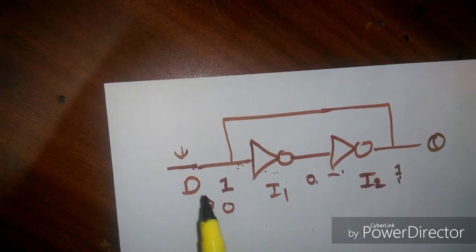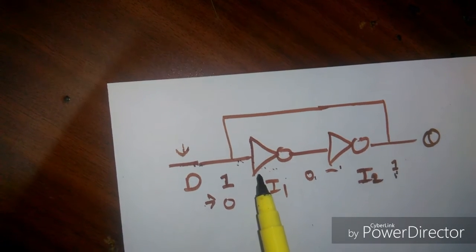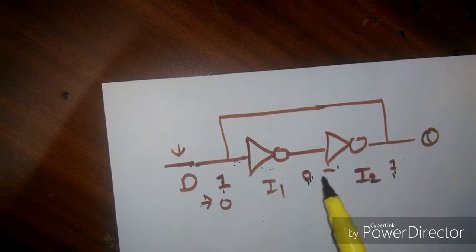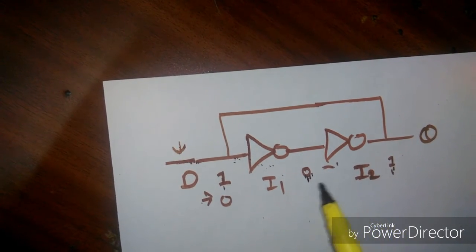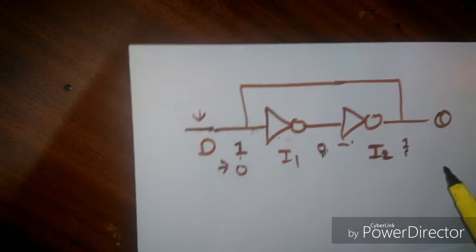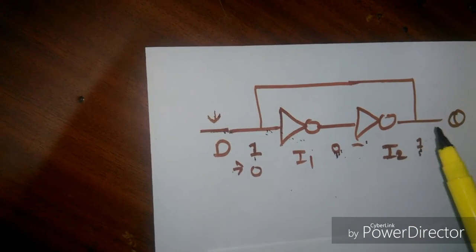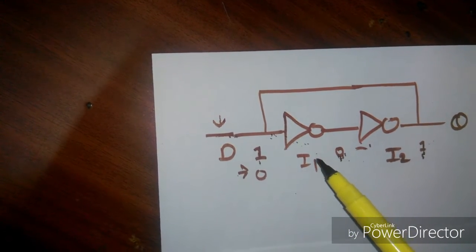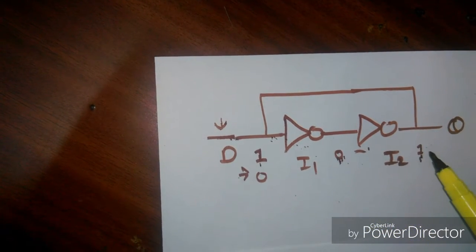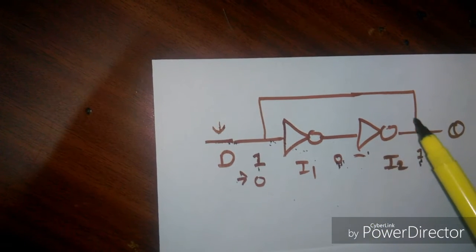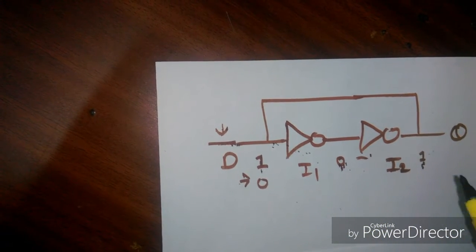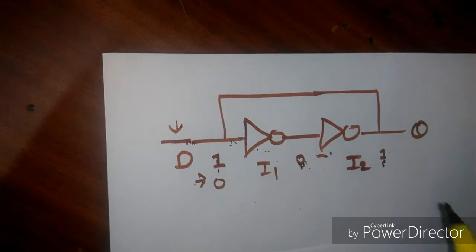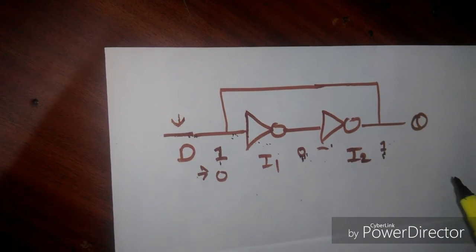When I give input 1 to the first inverter, it will invert it to 0. Then the second inverter gives output 1. This output 1 is fed back to the input of the first inverter, which makes it 0 and 1 again. So this bit keeps on circulating the circuit, and this is how the bit gets stored.